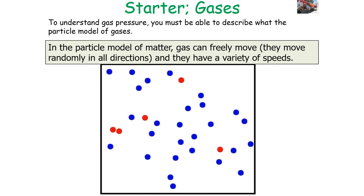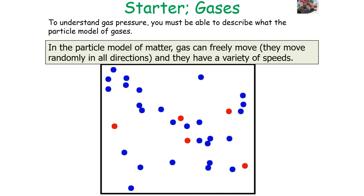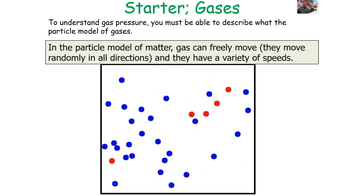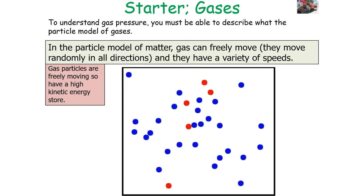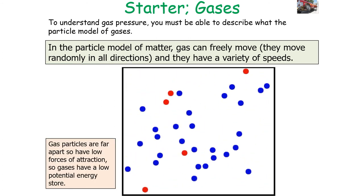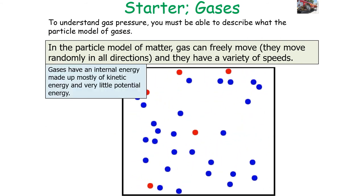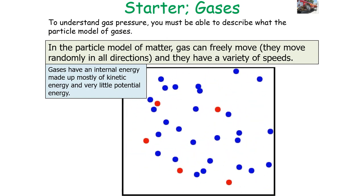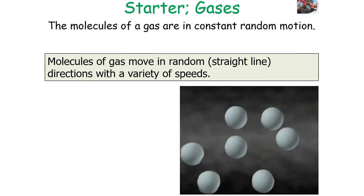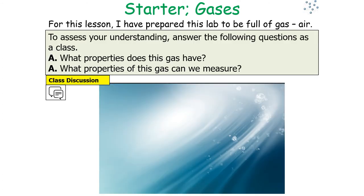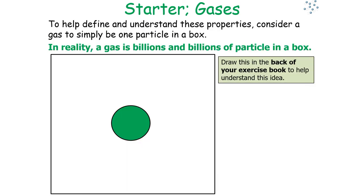The last topic is gas pressure. In the particle model, gas molecules can freely move randomly in all directions and have a variety of speeds. Because they're freely moving, they have a high kinetic energy store, but because they're so far apart they have a low force of attraction, so a low potential energy store. Gases therefore have an internal energy made up mostly of kinetic energy and very little potential energy. The properties we can measure of a gas are its volume, temperature, and pressure.